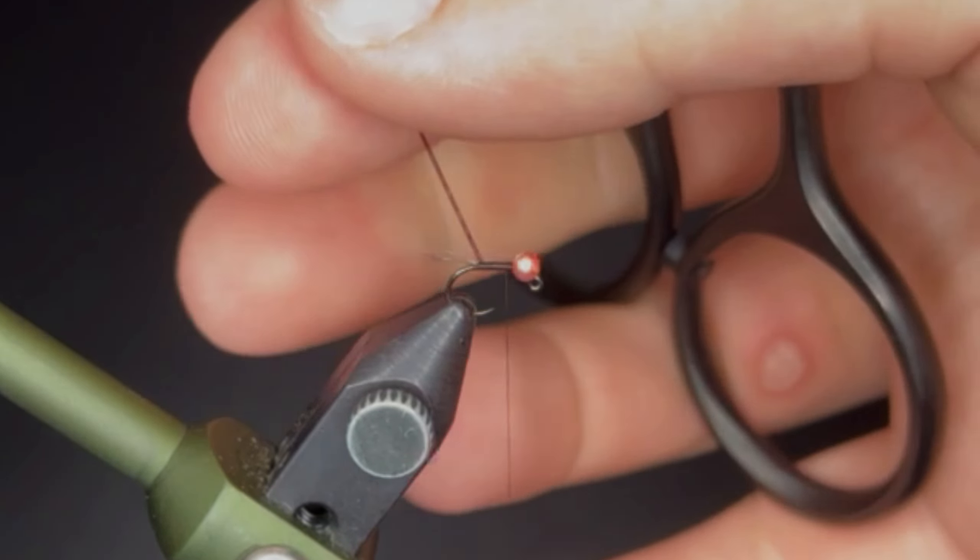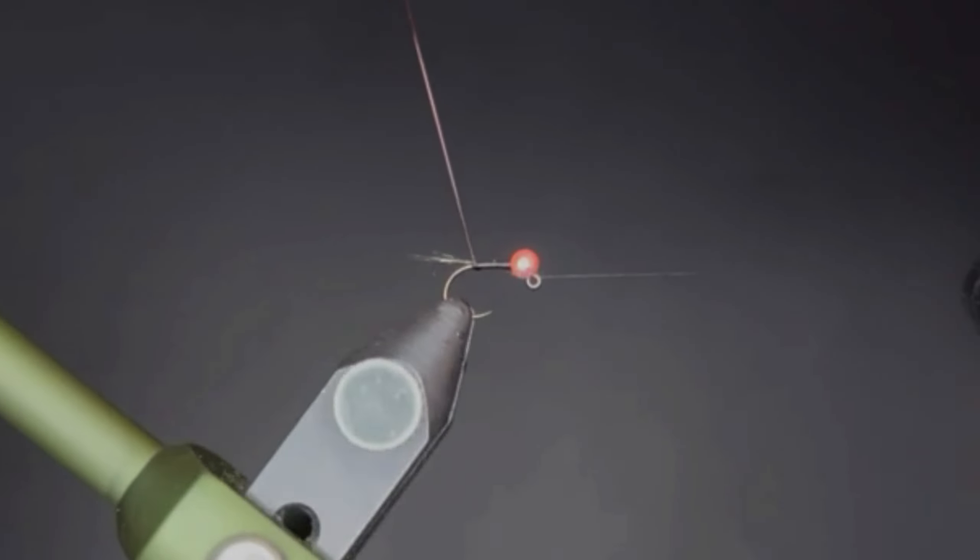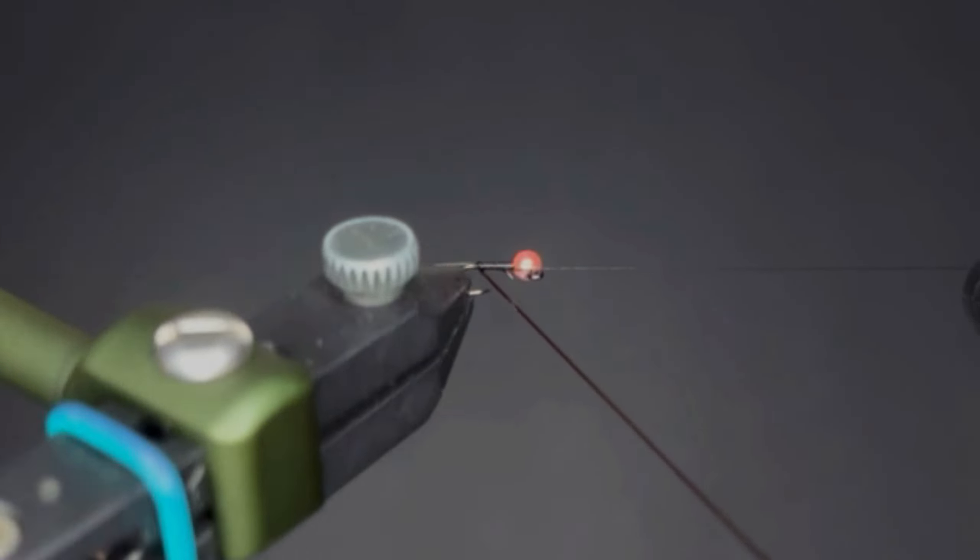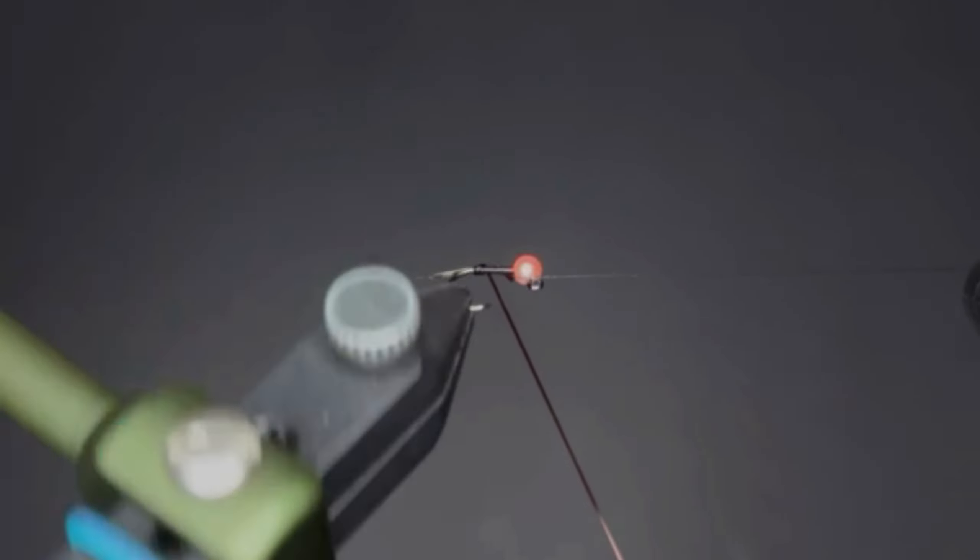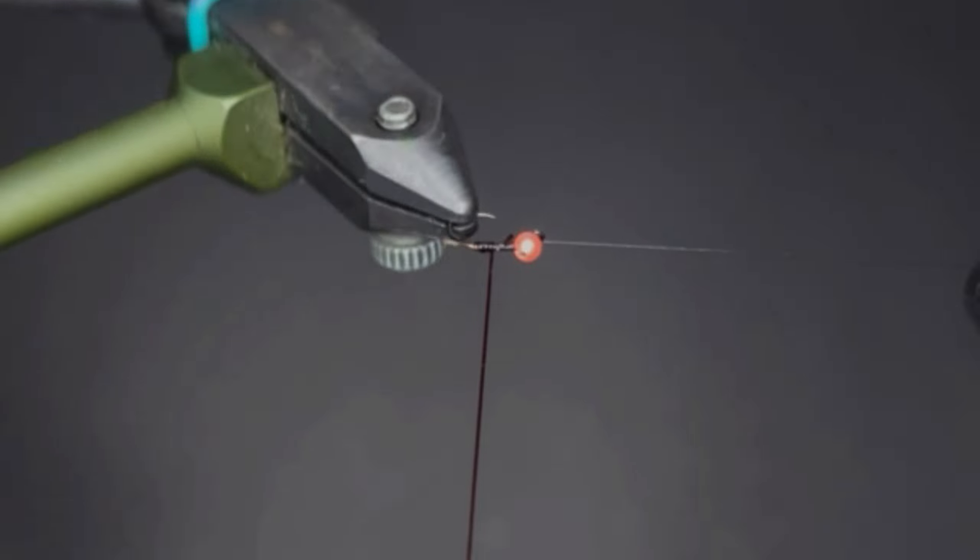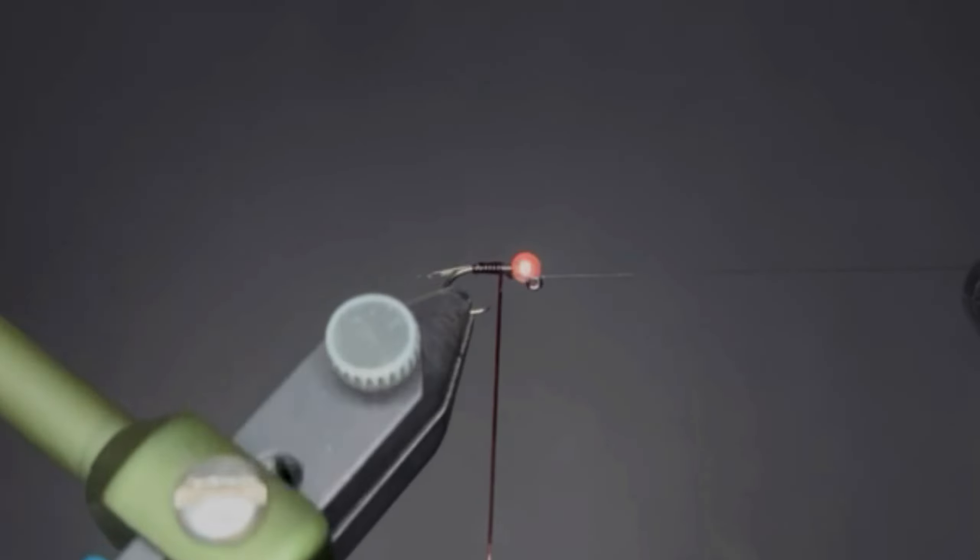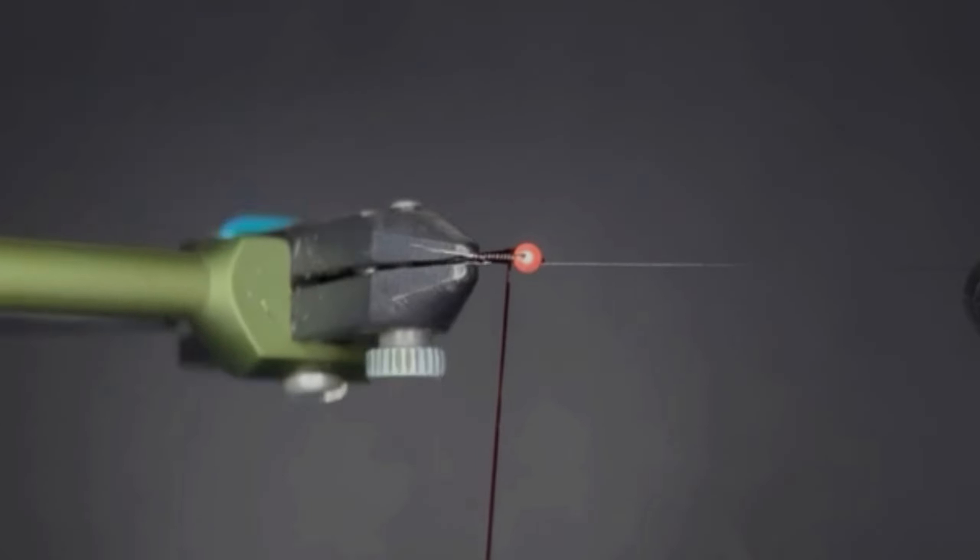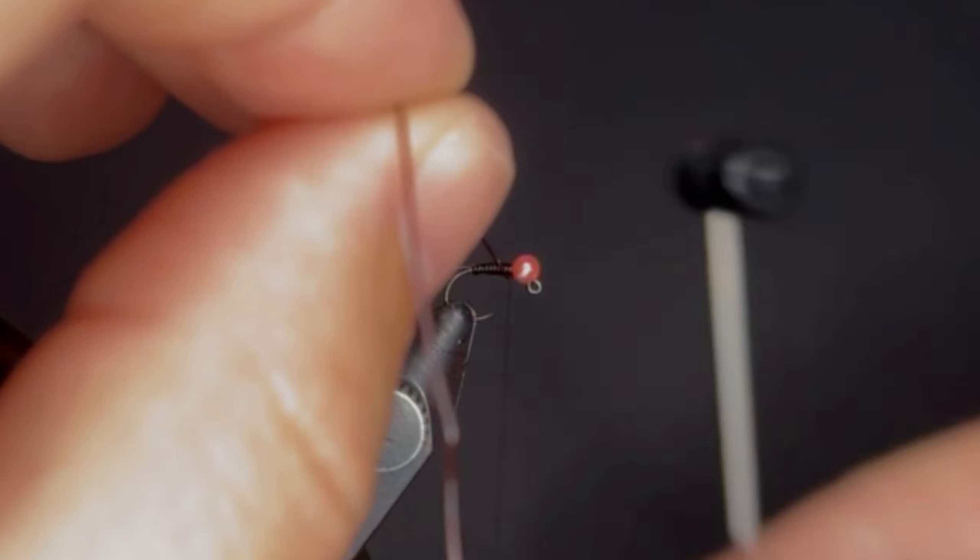Now we've got our stretch tubing and we're going to do close touching wraps forward, then start easing some of that tension off and build a little bit of a taper as we work our way forward. We're going to tie that off here right behind the bead.